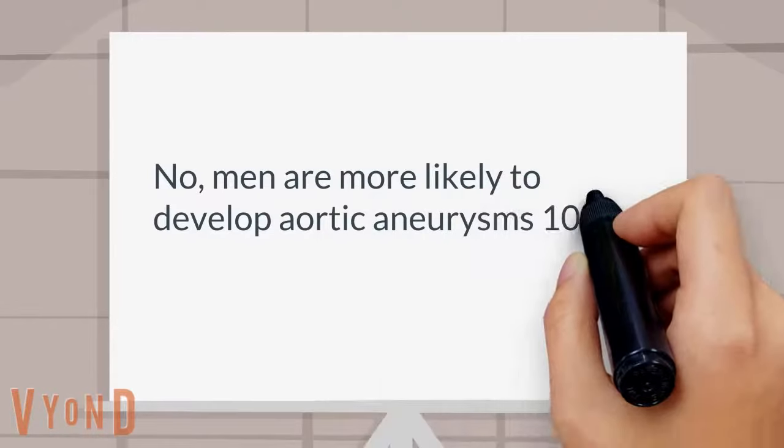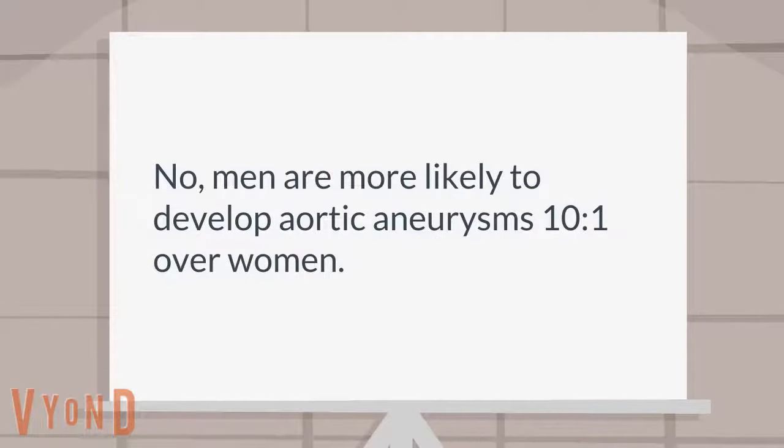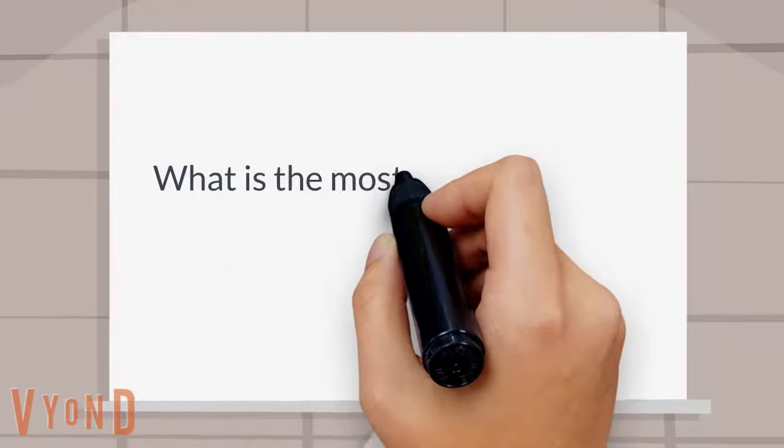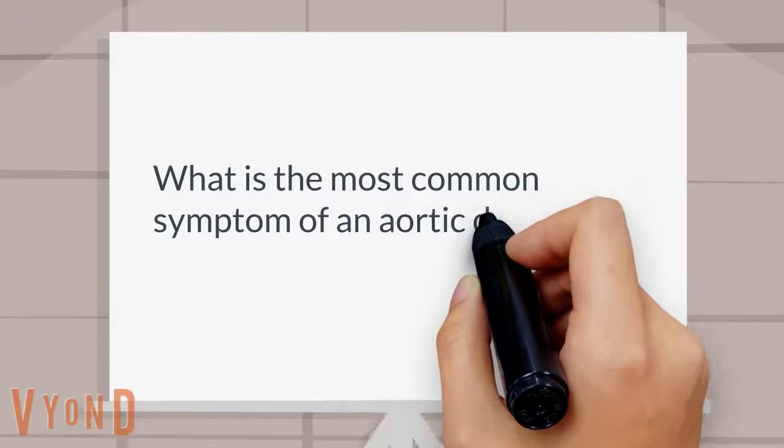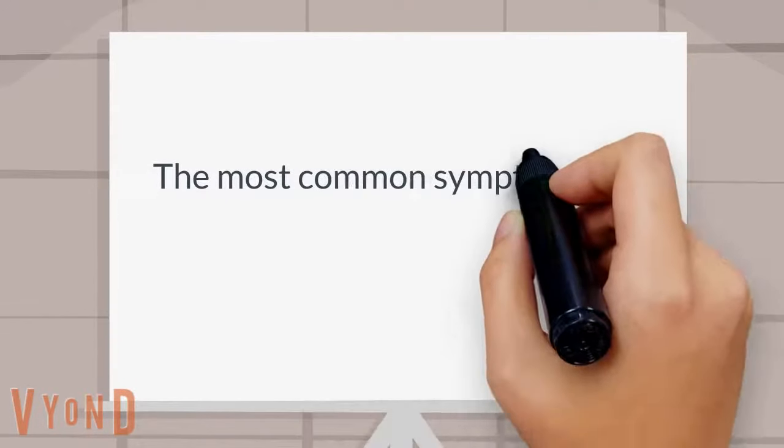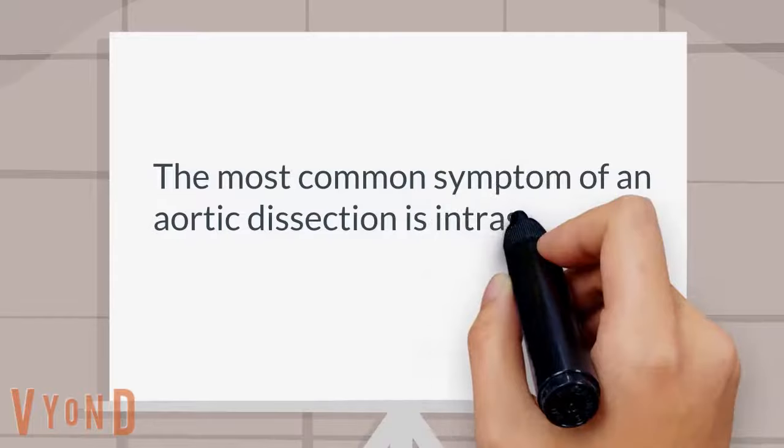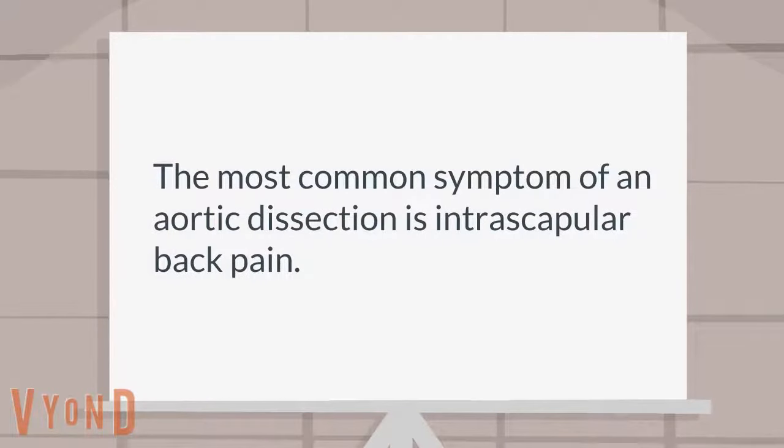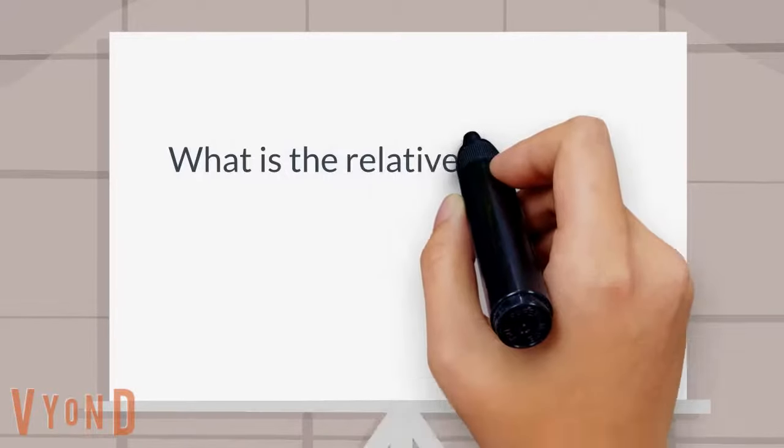aneurysms at a rate of 10 to 1 over women. What is the most common symptom of an aortic dissection? The most common symptom of an aortic dissection is intrascapular back pain. What is the relative risk of rupture in patients with abdominal aortic aneurysms?